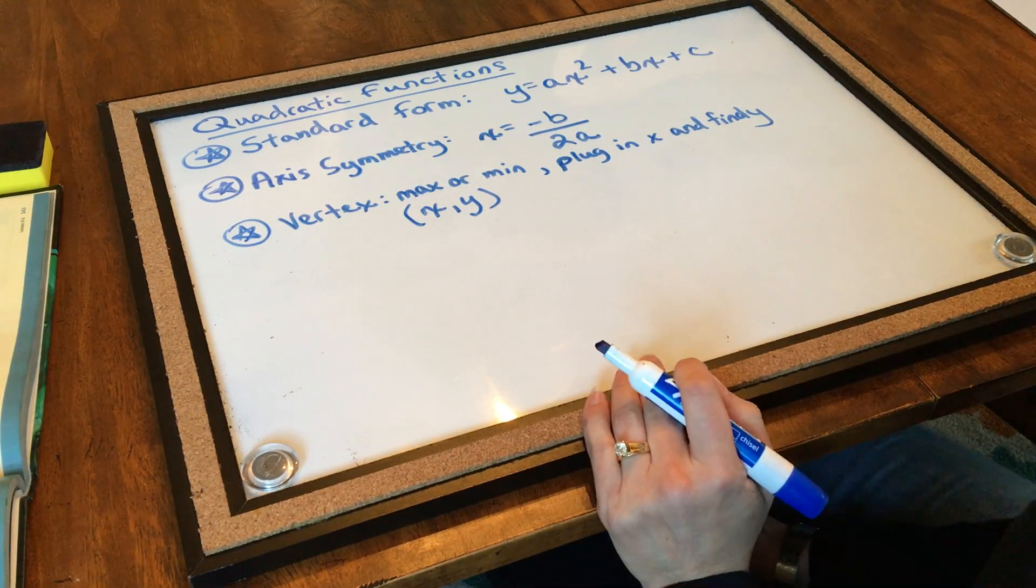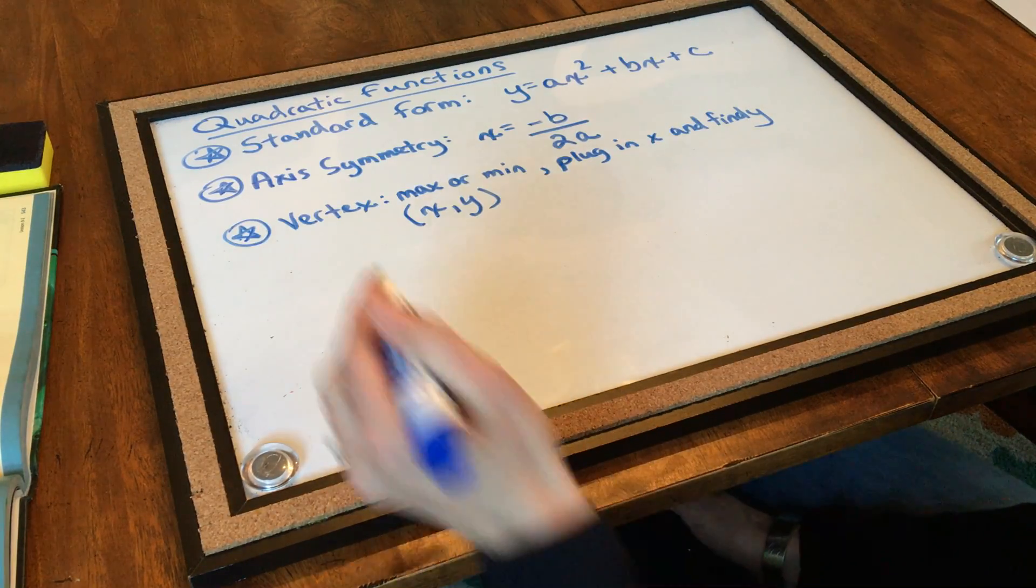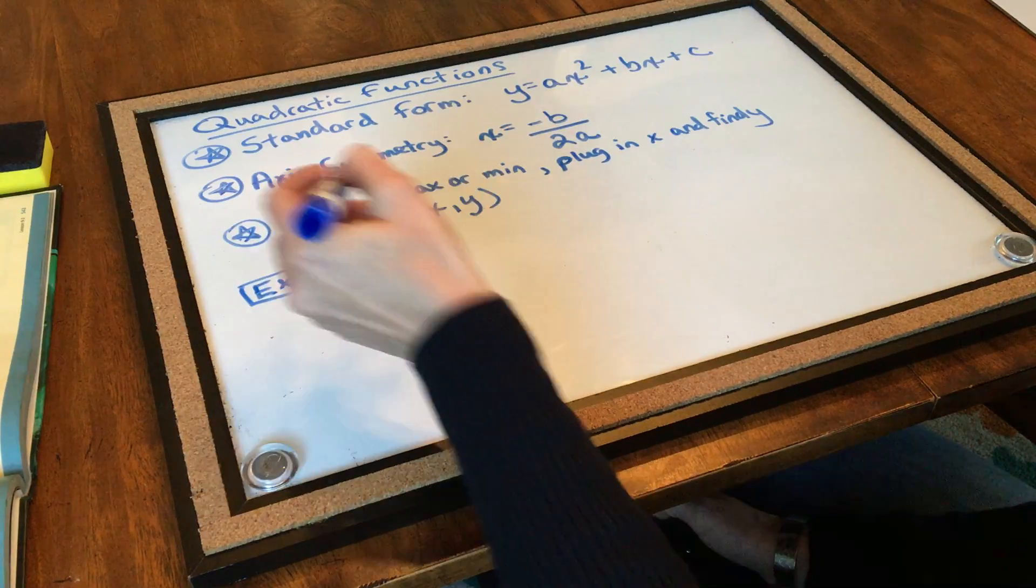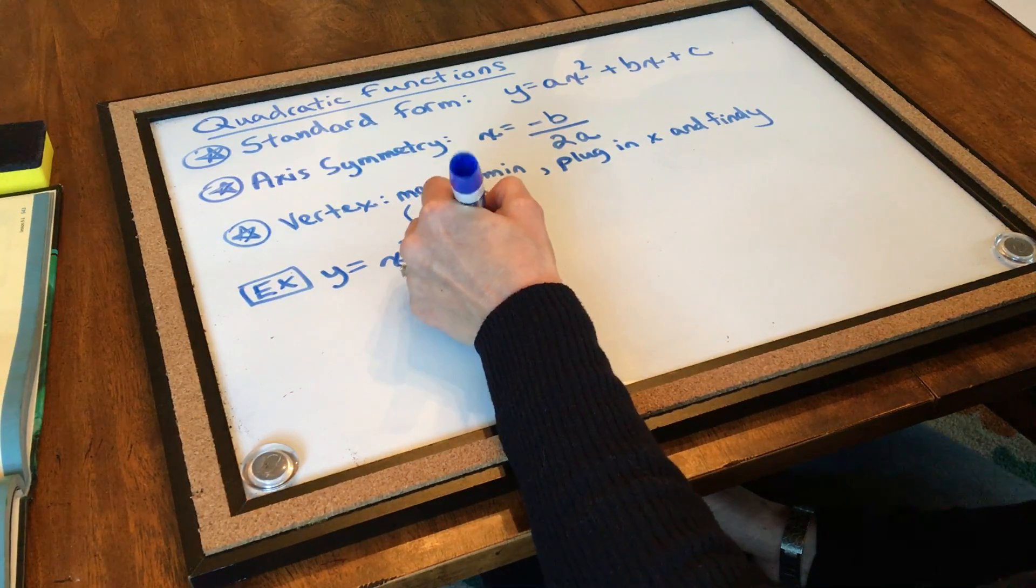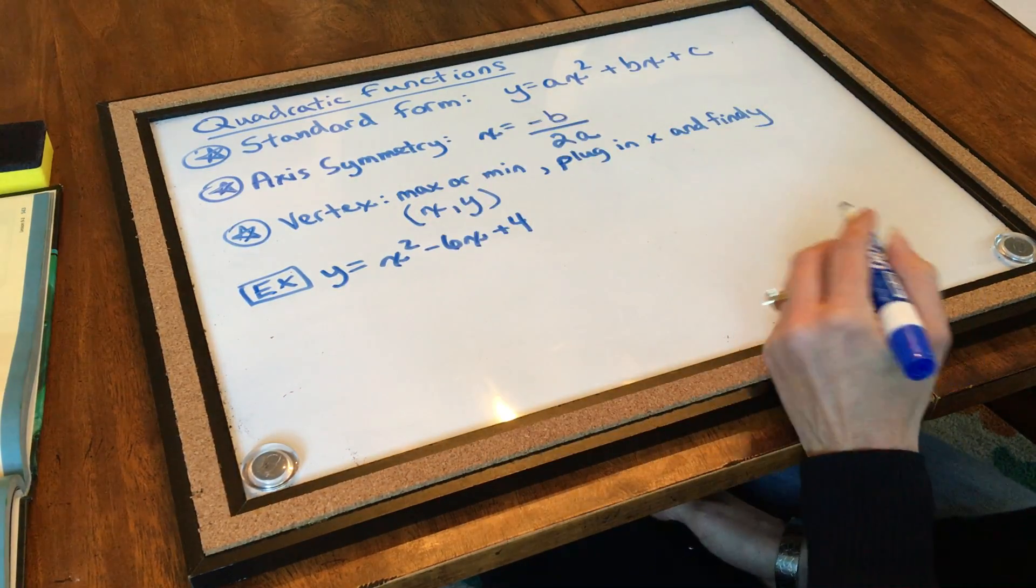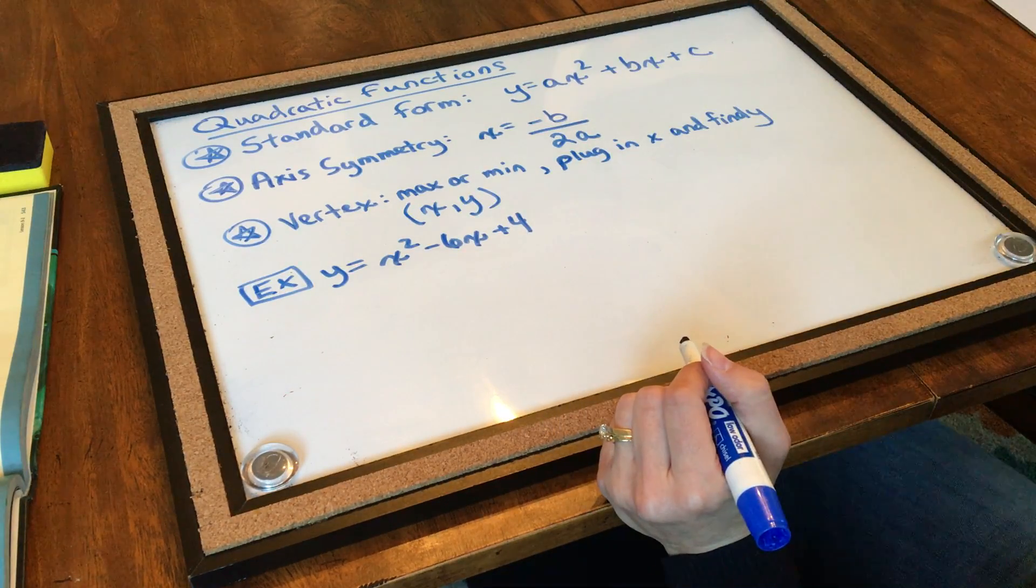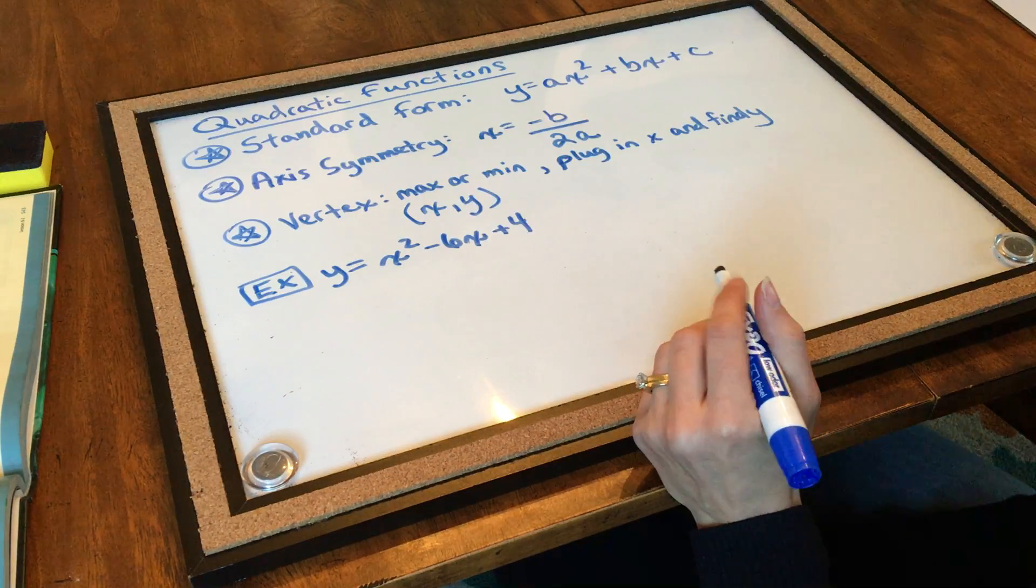Let's try an example. So, I'm working on problem one on page 542. So, this example gives us the equation y equals x squared minus 6x plus 4. And, the good news is, is that this is already written in standard form for us. So, I should be able to find both the axis of symmetry and the vertex.